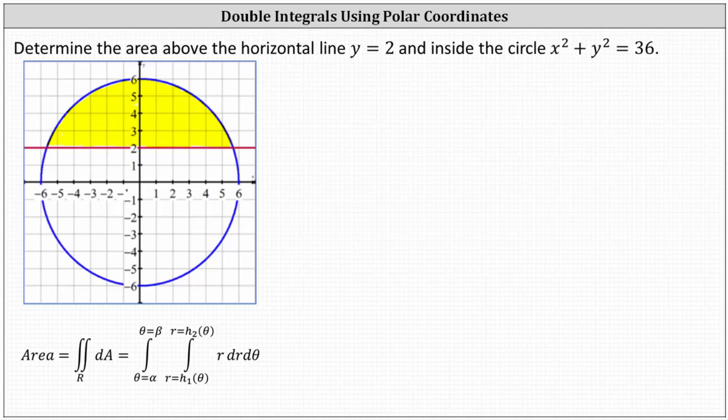Determine the area above the horizontal line y equals two and inside the circle x squared plus y squared equals 36, which is the yellow shaded region. To find this area, we'll be using polar coordinates. Recall when using polar coordinates, differential A is equal to r dr d theta.